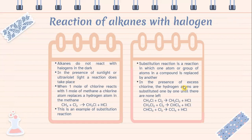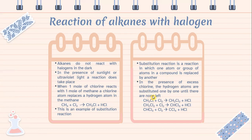Reaction of alkanes with halogens. Alkanes do not react with halogens in the dark. In the presence of sunlight or ultraviolet light, a reaction does take place. When one mole of chlorine reacts with one mole of methane, a chlorine atom replaces a hydrogen atom in the methane. This is an example of a substitution reaction: CH₄ + Cl₂ → CH₃Cl + HCl. A substitution reaction is one in which one atom or group of atoms in a compound is replaced by another. In the presence of excess chlorine, the hydrogen atoms are substituted one by one until none are left.